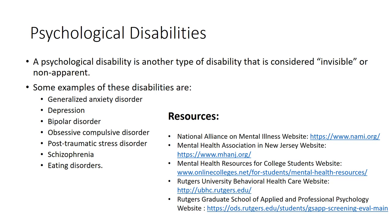A psychological disability is another type of disability that is often invisible and sometimes begins during college. Some examples are generalized anxiety disorder, depression, bipolar disorder, obsessive compulsive disorder, post-traumatic stress disorder, schizophrenia, and eating disorders. Each of these psychological disabilities has its own symptoms, which may vary for each person. You can learn more about each disability from the National Alliance on Mental Illness. The Mental Health Association in New Jersey and Mental Health Resources for College Students are two other resources, and all links are included on the current slide and at the end of the presentation.